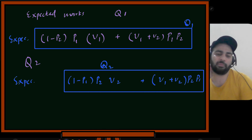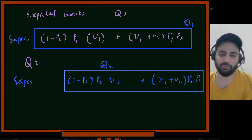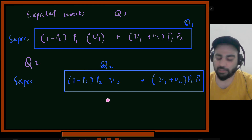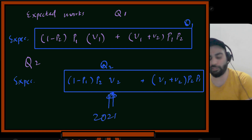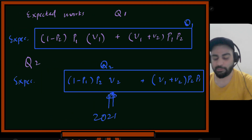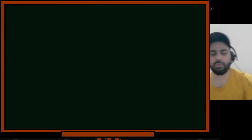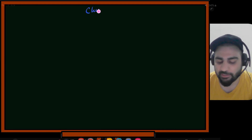That's what expectations mean — you get expected values to make decisions. This problem appeared in a simple version in the 2021 GATE exam where you just needed to plug in values. Now let's solve more problems to get a hold of expectations, and then we'll study linearity of expectations.